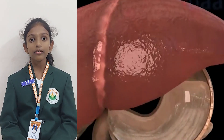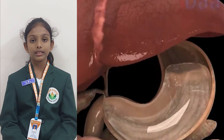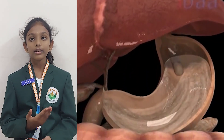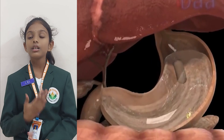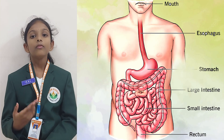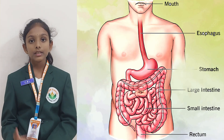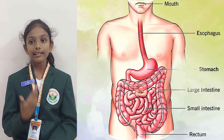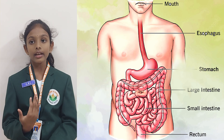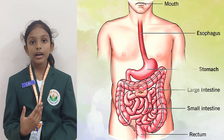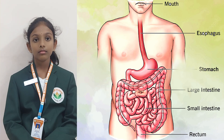Organs of the digestive system include the mouth, foodpipe, stomach, small intestine, large intestine, rectum, and anus.